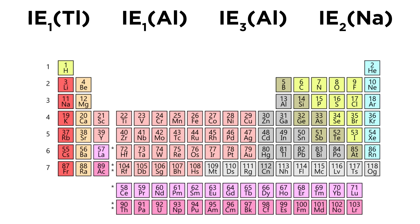Here are the transitions we are looking at. Let's find these elements on the periodic table, because this is a periodic trend that we're looking at. Here is thallium, number 81; here is aluminum, number 13; and here is sodium, number 11.